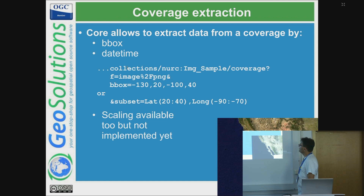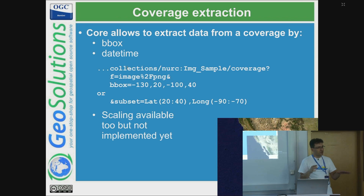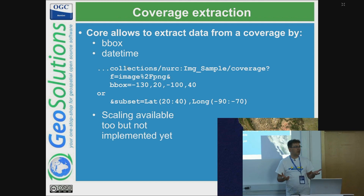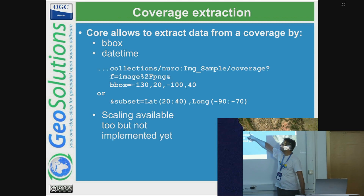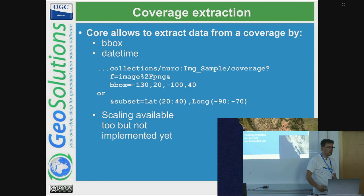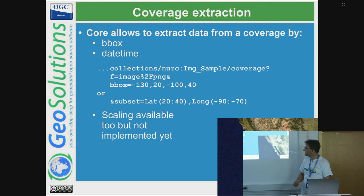You can do coverage extraction either by bounding box or using 'subset'. Subset is an interesting take on the axis order issue. With OGC APIs you know you're using WGS84, but for other CRSs the axis order can be ambiguous. With subset, there is no question: you specify a range of latitude and a range of longitude explicitly, so no more axis order problems when using subset, at least in the requests.